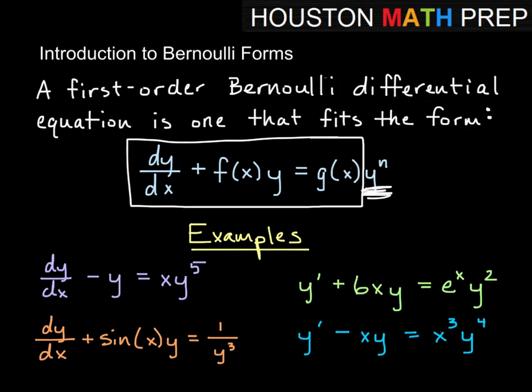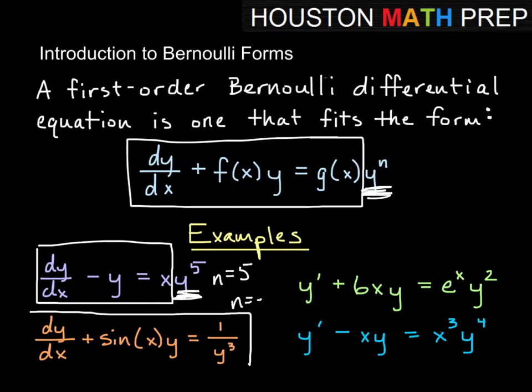So you can see some examples down here. If we look at this, we basically have a linear equation, but the right-hand side is multiplied by y to the 5, so n equals 5 here. Over here we have basically the same thing, except on the right-hand side we have 1 over y cubed. In other words, here n is equal to negative 3. So we have our dy/dx plus this is our function of x times y, our e to the x is our g(x), and then y squared, obviously n is equal to 2 here.